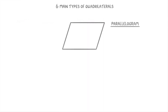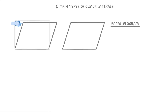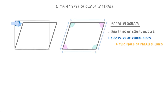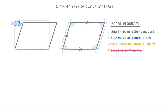Next up we have the parallelogram, which is very similar to a rhombus except it's a pushed over rectangle rather than a pushed over square. Just like the rhombus, it has two pairs of equal angles. Because it came from a rectangle though, the sides aren't all the same length — instead it has two pairs of equal sides. It also has two pairs of parallel sides. Parallelograms don't have any lines of symmetry, but they do have rotational symmetry of order 2.